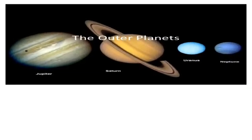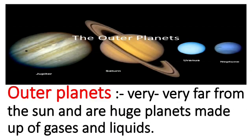The next four planets are Jupiter, Saturn, Uranus, and Neptune. These are the outer planets, also known as gaseous planets. These planets are very far away from the sun and are huge planets made up of gases and liquids.